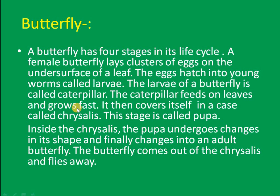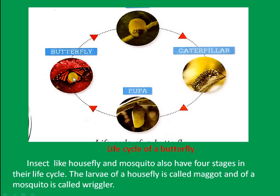The larva of a butterfly is called a caterpillar. The caterpillar feeds on leaves and grows fast. It then covers itself in a case called a chrysalis. This stage is called the pupa. Inside the chrysalis, the pupa undergoes changes in shape and finally changes into an adult butterfly, which comes out and flies away.